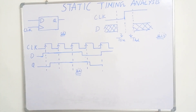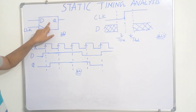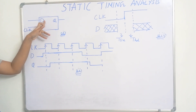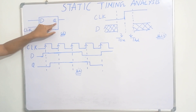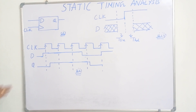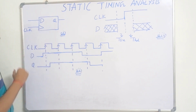Welcome. Today we will discuss a very important concept of static timing analysis. I have taken a D flip-flop. D is the input, this clock is the clock input, and this Q is the output of this flip-flop. This is the clock pulse. I have taken it to be a positive edge triggered D flip-flop.